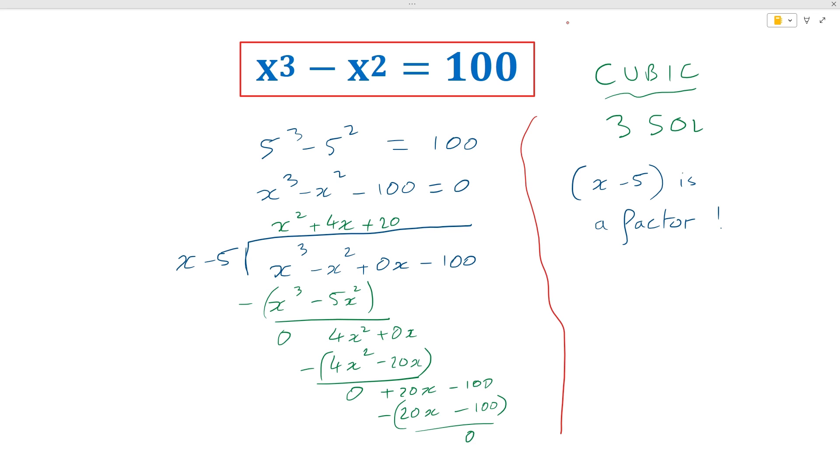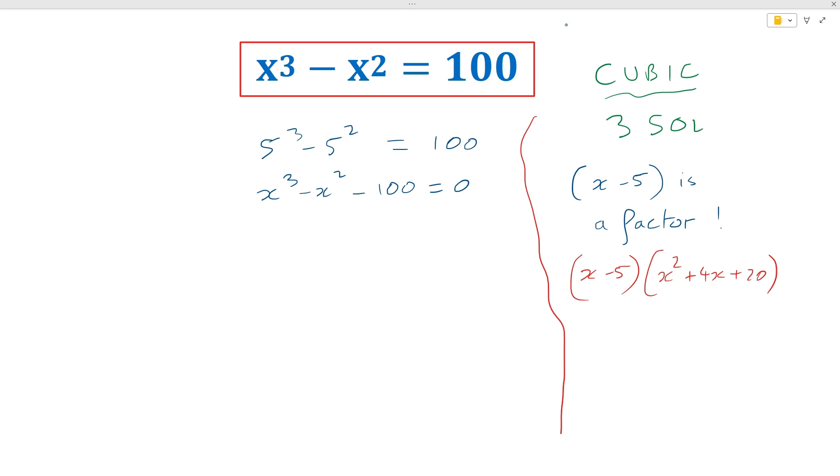So this means that we can rewrite our cubic as, and perhaps I'll do this on the right hand side for you guys, x minus 5 multiplied by x squared plus 4x plus 20. So noticing that we end up with x squared plus 4x plus 20 equals 0, which is a second degree equation. So following the same logic, we should have two solutions to this.